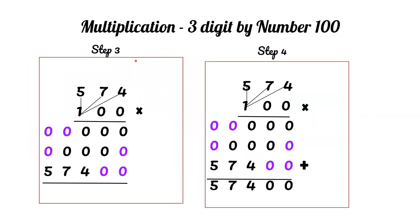Step 3: Then we multiply by 1. 1 times 4 is 4, which starts in the hundreds space because 1 is in the hundreds. 1 times 7 is 7, and 1 times 5 is 5.